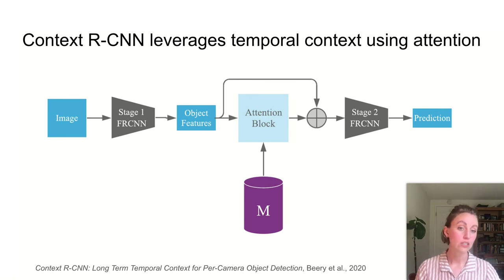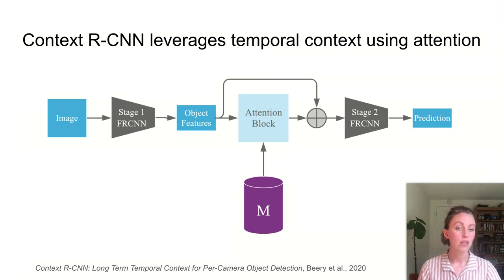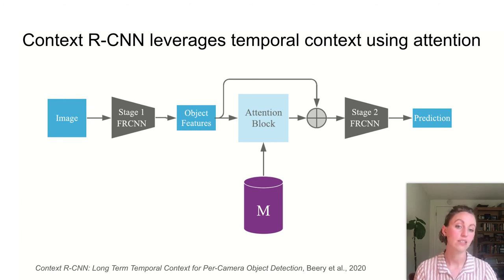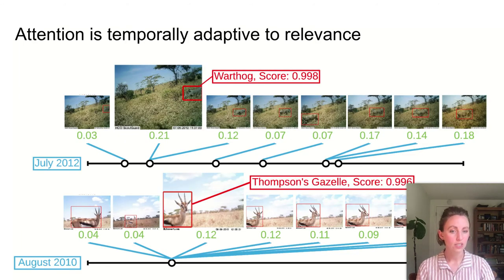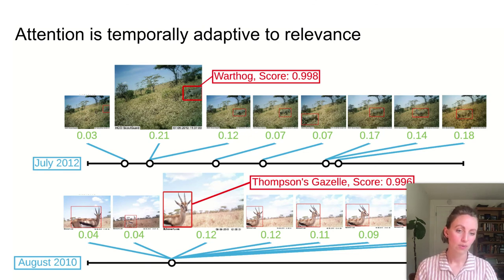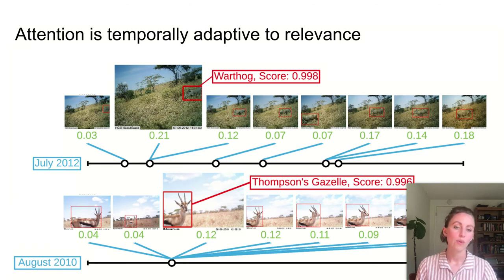Last year, taking inspiration from human experts we collaborate with, we designed an object detection network that builds up a month-long memory bank of what has been seen in a single sensor and uses object-centric attention into this memory to take advantage of that temporal context without any additional human labeling. This attention is temporally adaptive to relevance and can incorporate context from up to a month of data at a time. In the top example, we see the module attends to repeated use of a game trail by a warthog over weeks, while in the bottom example, the most useful memories are those from the same individual grazing in front of the camera.